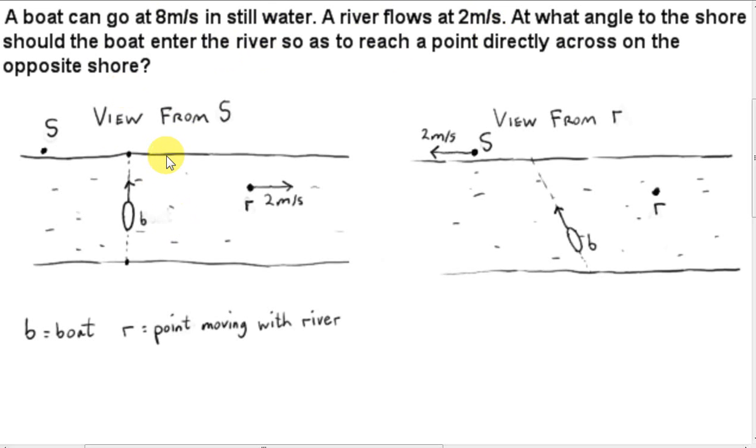We will consider two views of the situation. One view is from a point S that's fixed on the shore. From the point of view of S, a point R in the river moving with the river has a velocity of 2 meters per second. Let's say that direction is to the right.